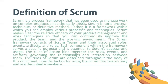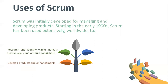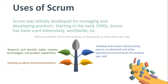The rules of Scrum are described throughout the body of this document. Specific tactics for using the Scrum framework vary and are described elsewhere. Uses of Scrum: Scrum was initially developed for managing and developing products. Starting in the early 1990s, Scrum has been used extensively worldwide to develop products and enhancements, research and identify viable markets, technologies, and product capabilities, release products and enhancements as frequently as many times a day, develop and sustain cloud, online, secure, on-demand, and other operational environments for product use, and sustain and renew products.